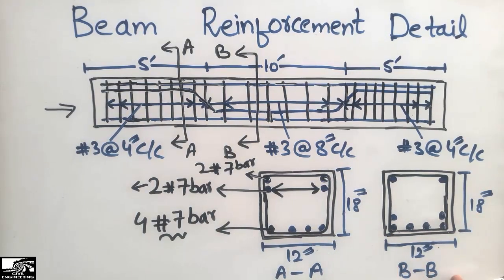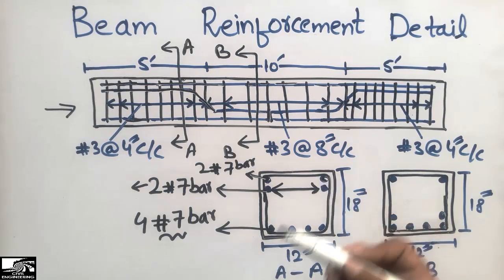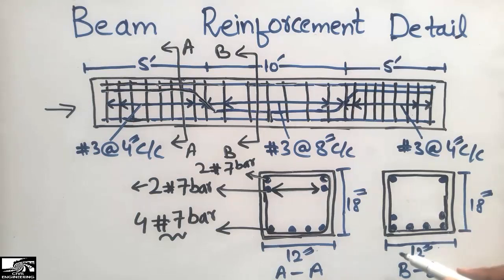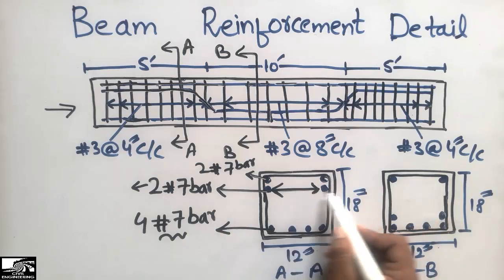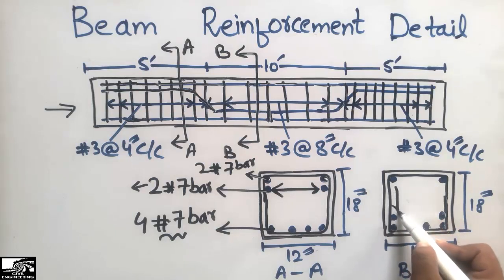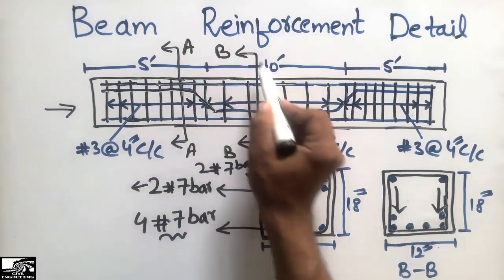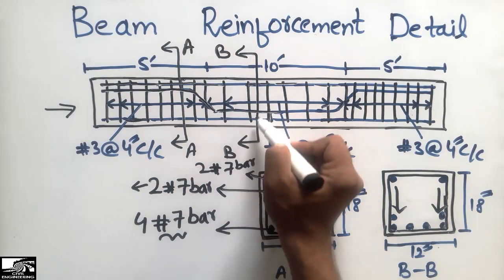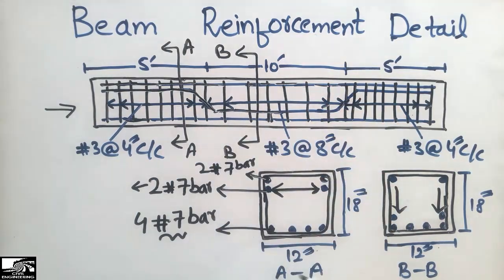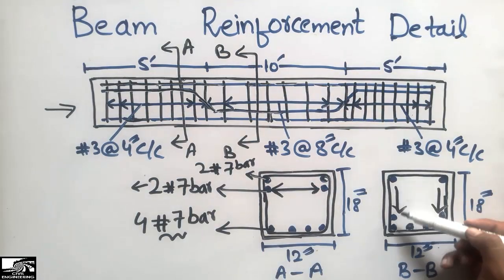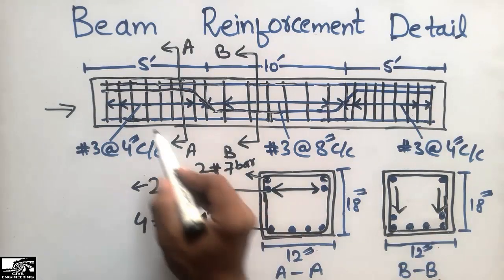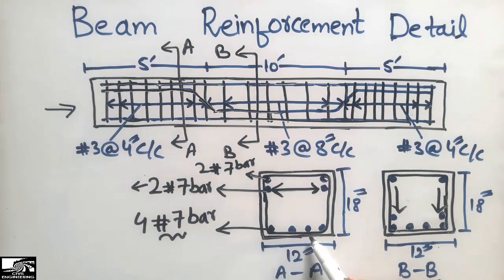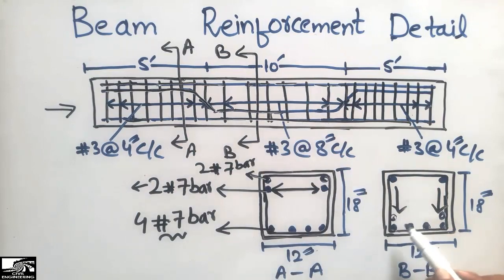Now coming to Section BB — we included Section BB because it is different from Section AA. The beam has the same width and depth in both sections, but in Section BB there is no crank bar at the top. The crank bar has moved down because at mid-span the crank bar is below the neutral axis, in the bottom portion. So in Section BB the crank bar has transferred into the bottom portion, joining the 4 straight bottom bars.